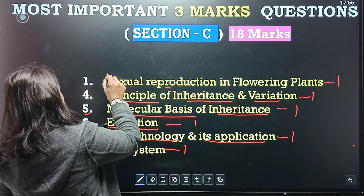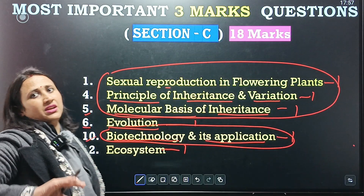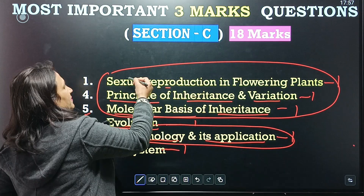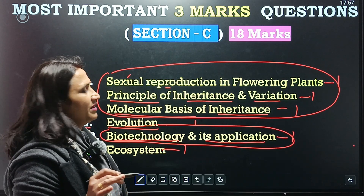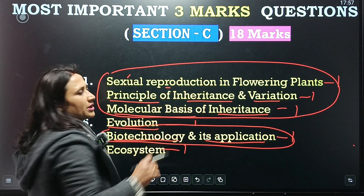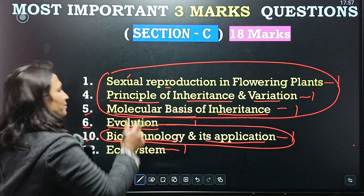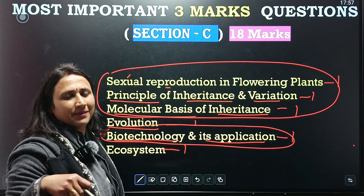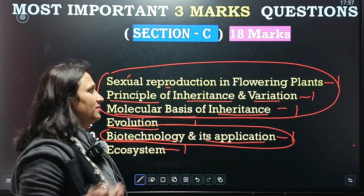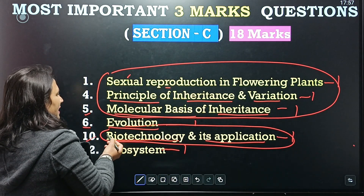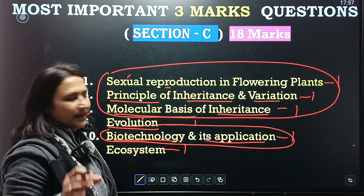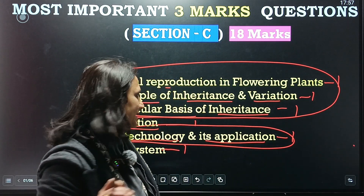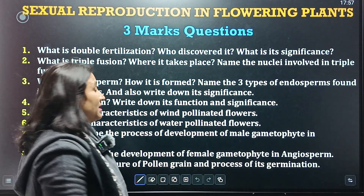From these four chapters, both two-mark and three-mark questions are asked in the examination. So from these chapters, questions appear in both Section B and Section C. From molecular basis of inheritance also, questions can come in both two marks and three marks. And from biotechnology and its applications also, two-mark questions are coming in Section B and three-mark questions in Section C.